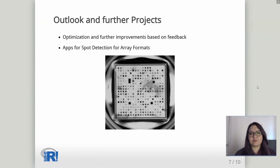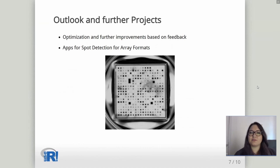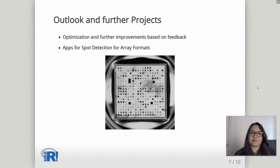What does the future hold for us? Our first priority is to optimize the application and do further improvements based on feedback. For example, we used the application in one of our master's programs and immediately found bugs to fix. The first thing was implementing an autosave, because for many students the application crashed and they had to start over. From the knowledge gained from the band-based assay application, we've also started working on applications for spot detection in array formats.